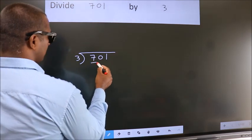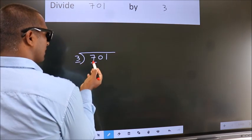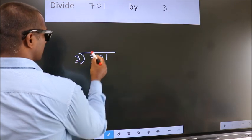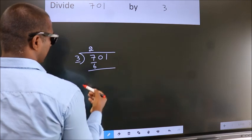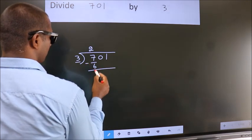Here we have 7. Here 3. A number close to 7 in 3 table is 3 times 2 is 6. Now we should subtract. We get 1.